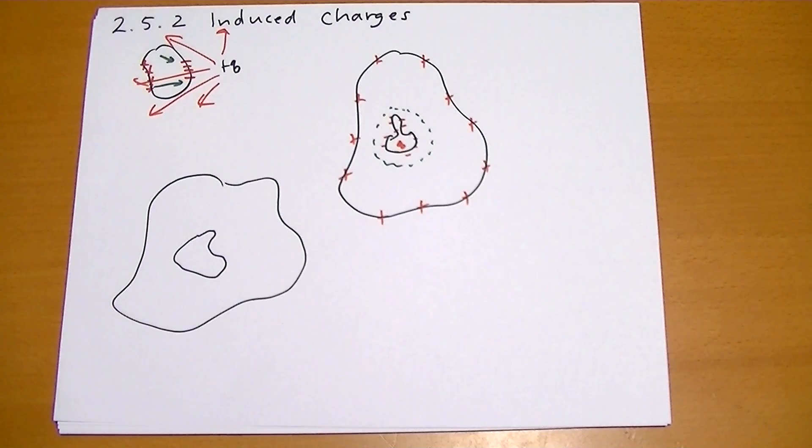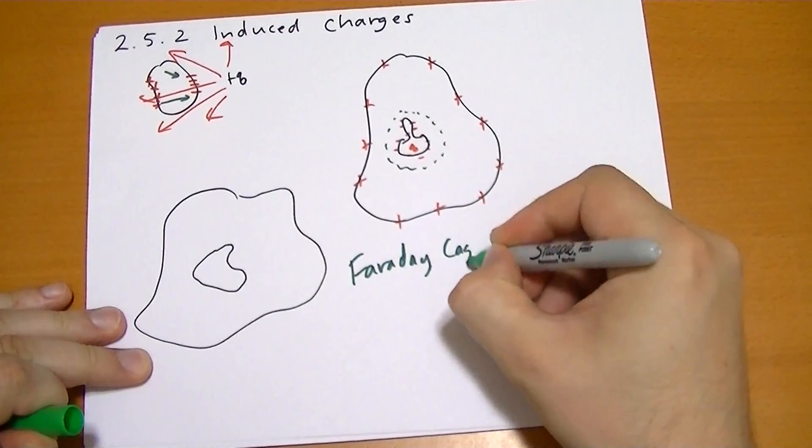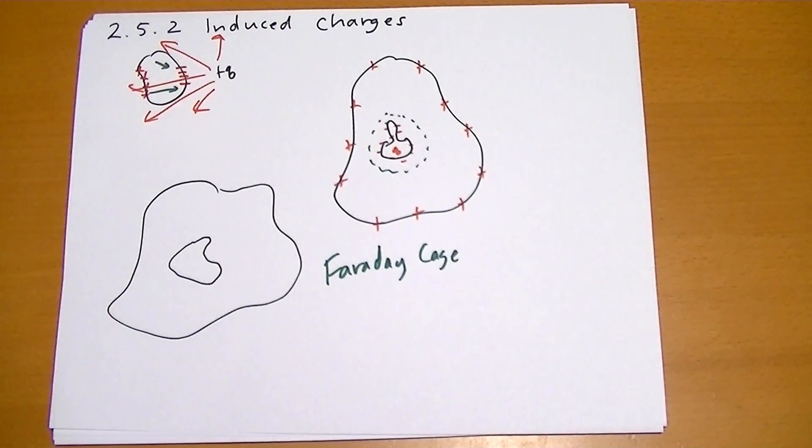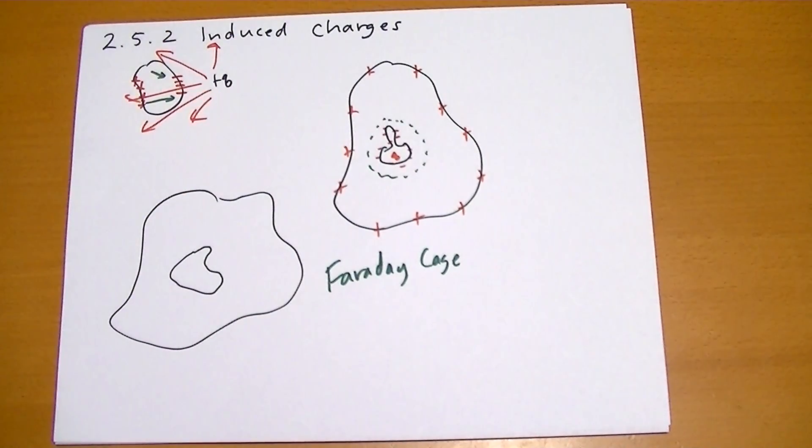We call this a Faraday cage. If you're sitting inside this, you're not going to feel electric fields from anything happening around you.